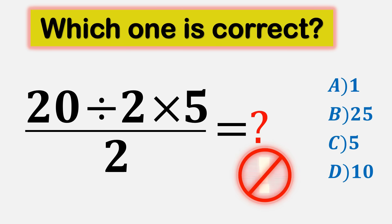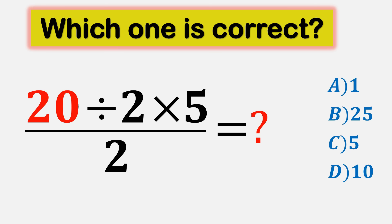Most people get this math question wrong, and it looks way easier than it really is. The problem is simple: 20 divided by 2 times 5, all over 2. Just a short string of operations, no brackets, no powers, and only the numbers 20, 2, and 5.